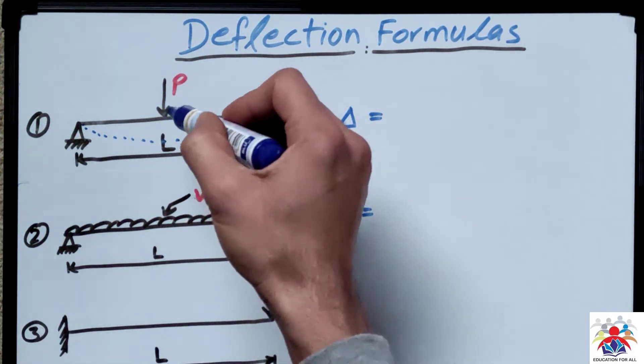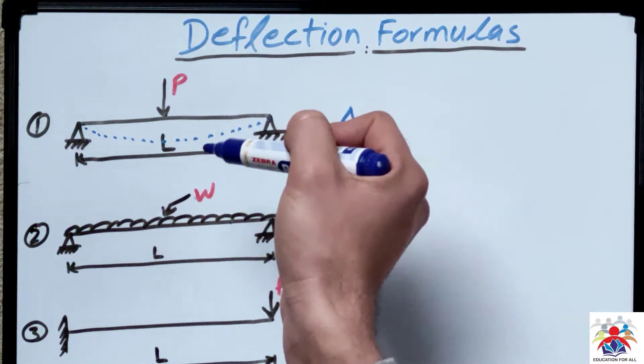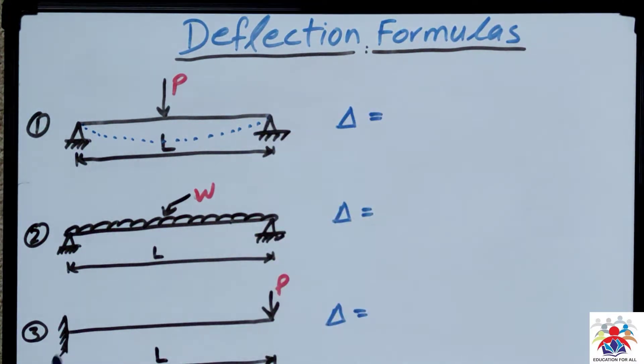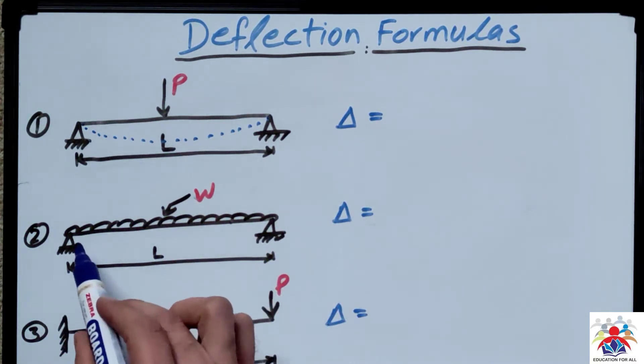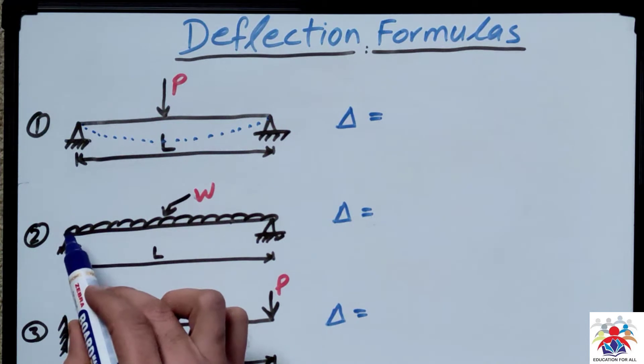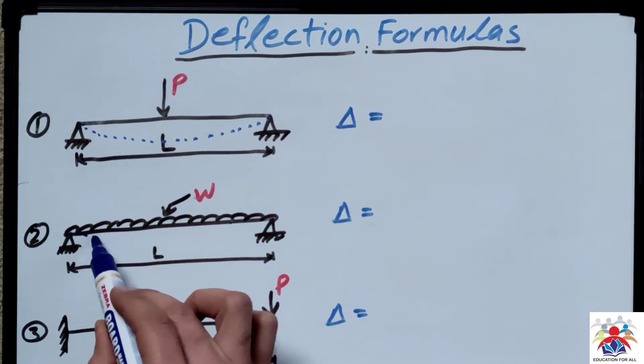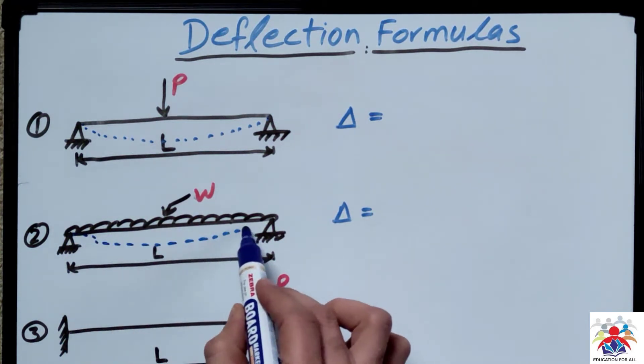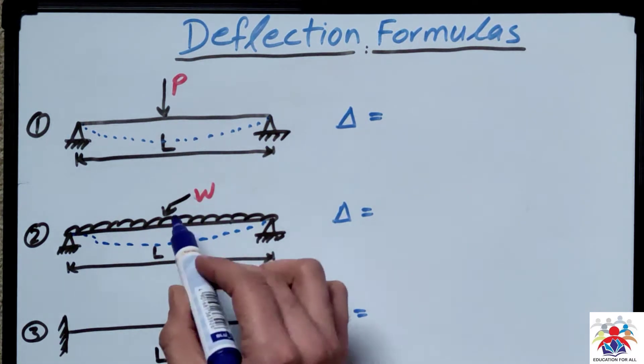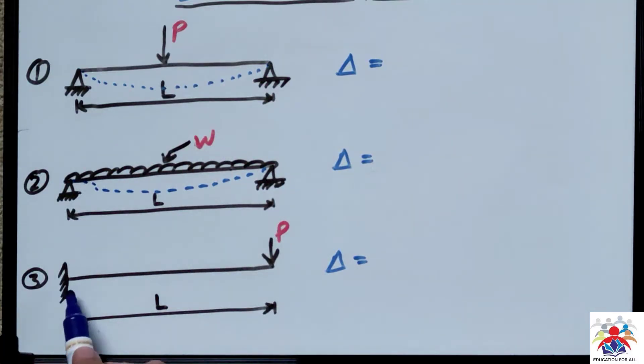The maximum deflection would be in the middle because the point load is acting in the middle of the beam. Similarly, we have another beam, simply supported beam but with the UDL load. This one will also be something like that, similar to point load. And the third loading condition.